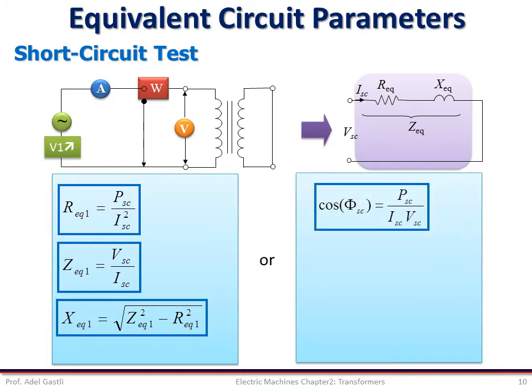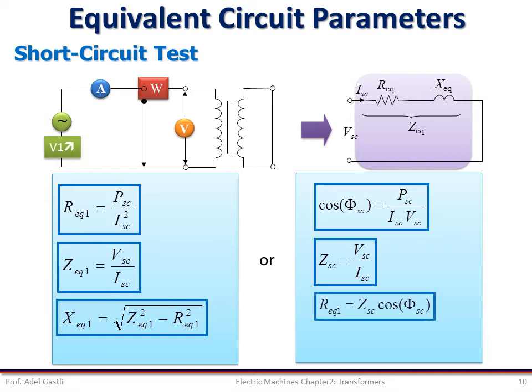Similarly to the open circuit test, we can also proceed in a different way and calculate first the power factor as the ratio of the short-circuit power over the short-circuit current and voltage. Then we calculate the equivalent impedance Z_equivalent as the ratio of the short-circuit voltage VSC and the current ISC. R_equivalent is equal to Z_SC multiplied by the power factor. Knowing the power factor, we can deduce the power factor angle and its sine value, and then calculate X_equivalent as the product of Z_equivalent and the sine of the power factor angle.